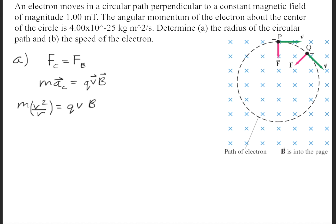If we further expand that, we get that the centripetal acceleration we can replace with v squared over r. And if we cancel the v's on both sides, we're left with mv over r is equal to q times b.